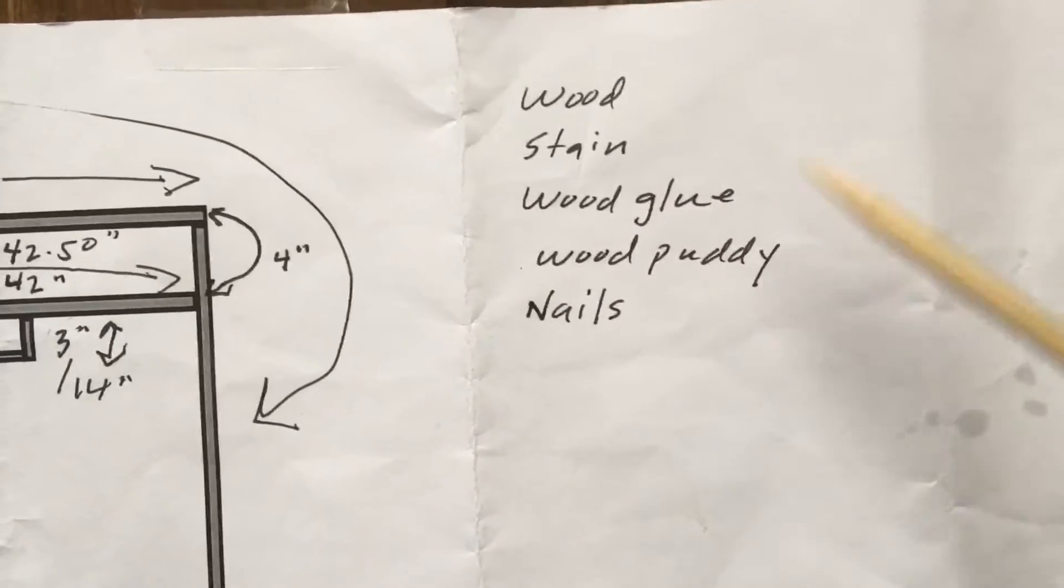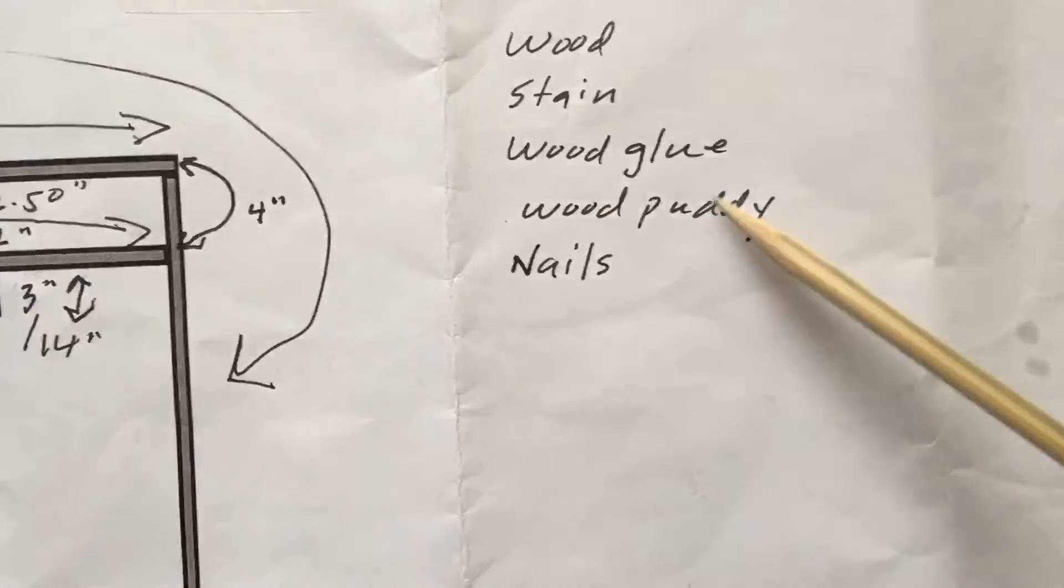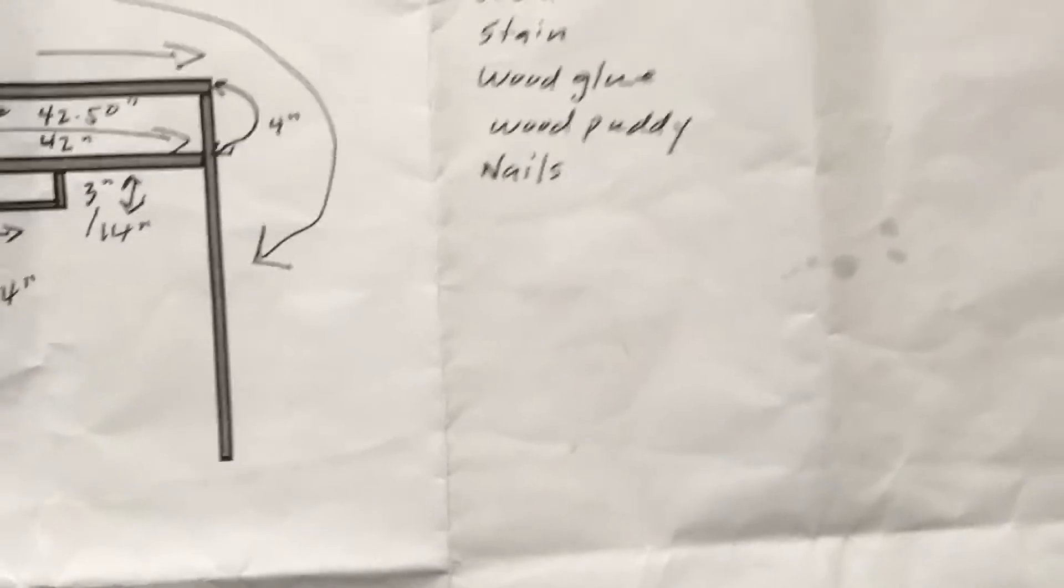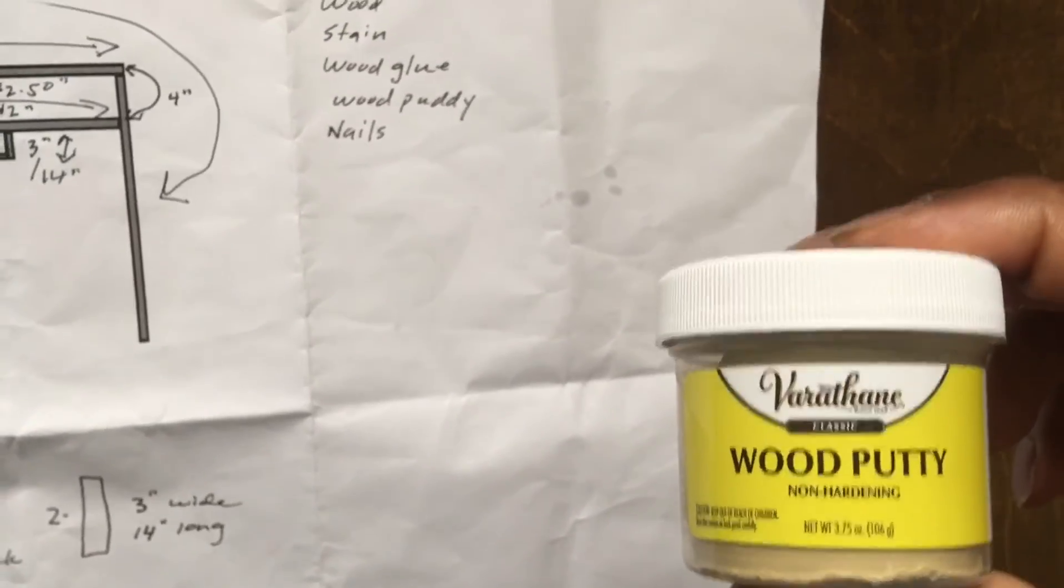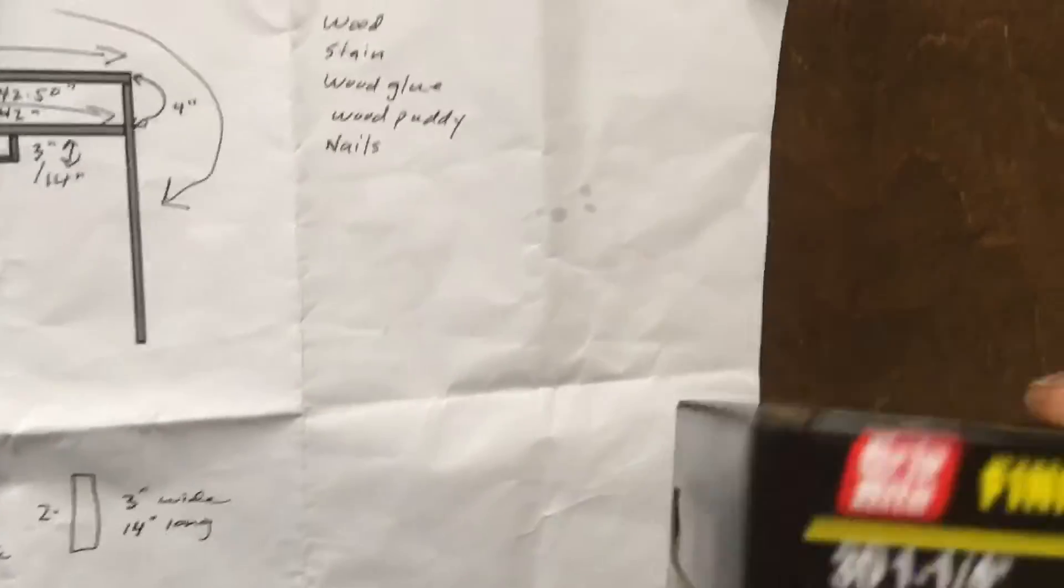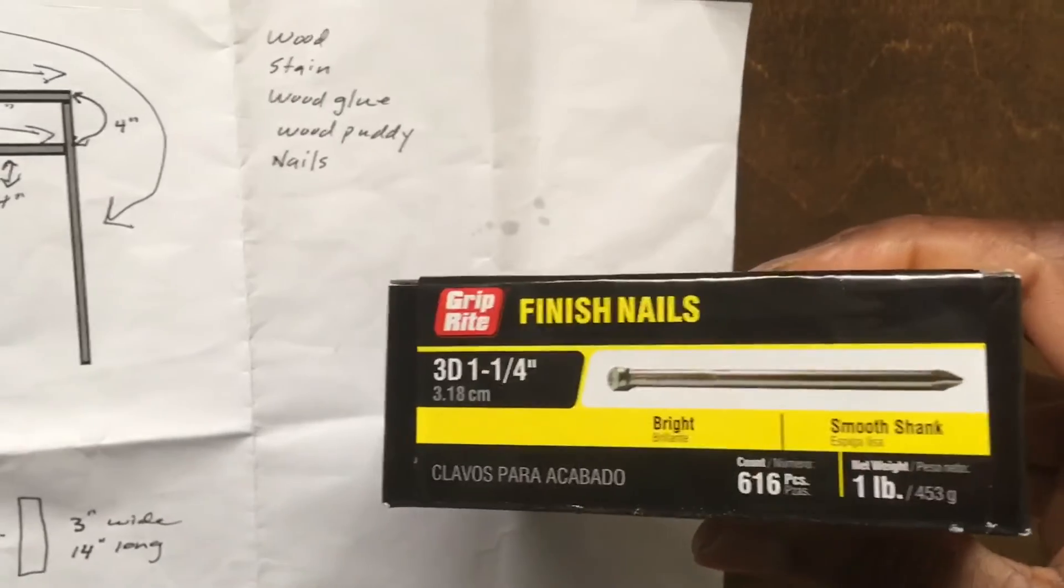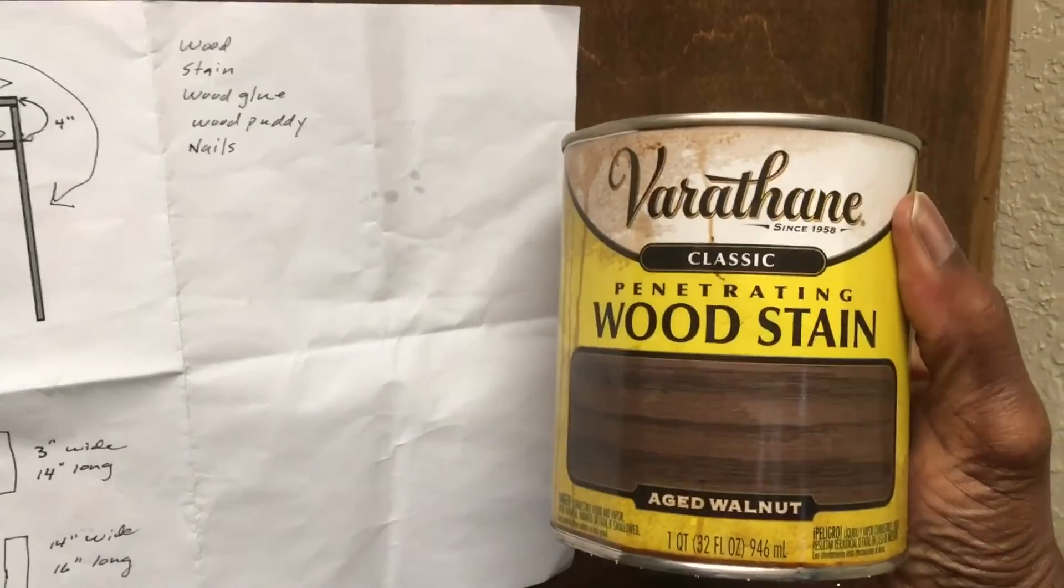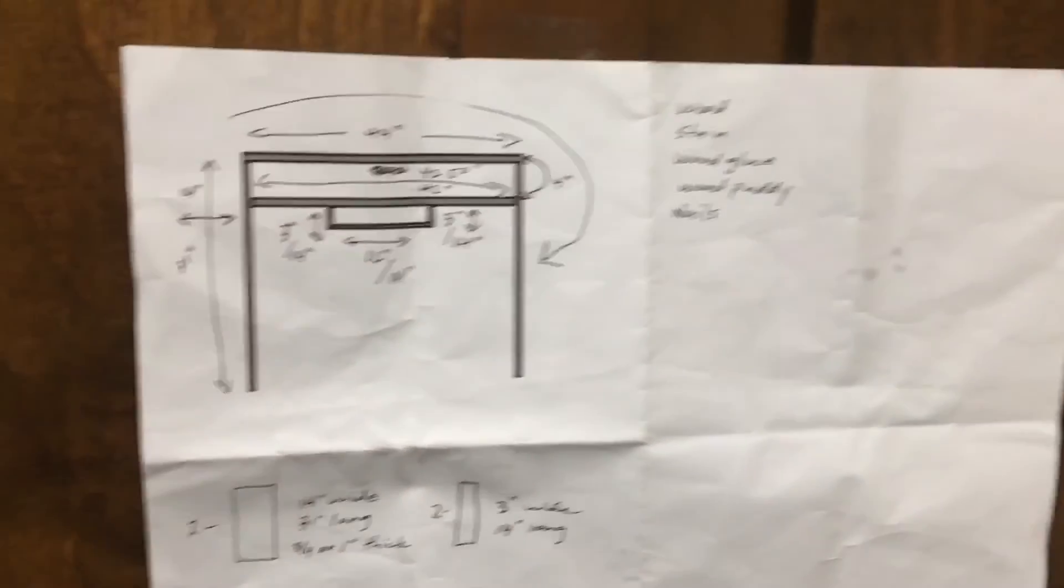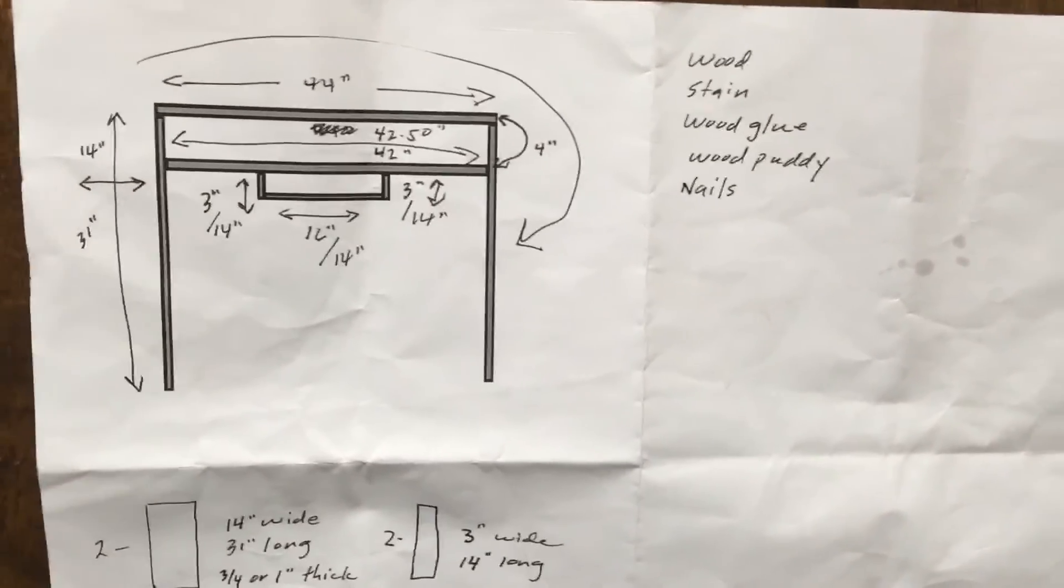Right here is my wood putty, got that. Got my nails right here—nice little box of finishing nails. And then I have my wood stain. I will see you guys later on step two.